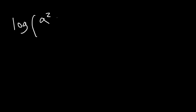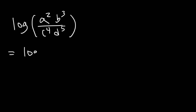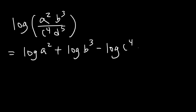Try this one: log of a squared, b to the third, c to the fourth, d to the fifth. Go ahead and expand it. So a and b are both on top, so it's going to be positive log a squared plus log b to the third. c and d are on the bottom, so it's going to have a negative sign in front — minus log c to the fourth minus log d to the fifth.